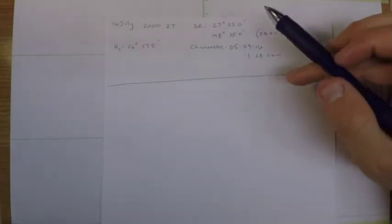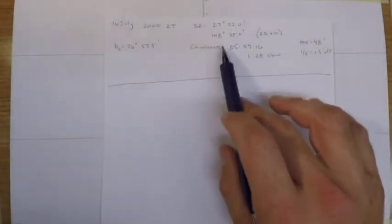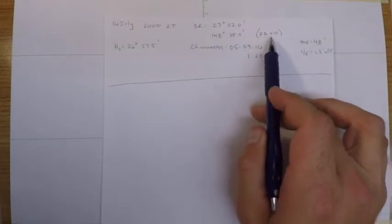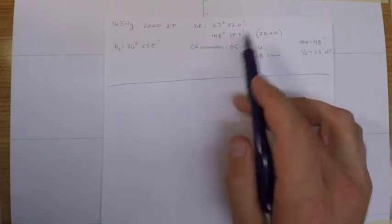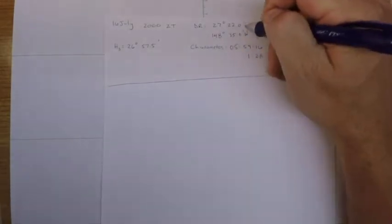We want to be as close as we possibly can. So as usual, I write down the preliminary information. 16 July, our DR position that corresponds to a zone descriptor of plus 10, 148 degrees west.